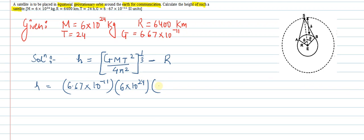Then time period 24 hours, we'll convert it to seconds: 24 into 60 into 60 upon 4π square, 4 into 3.14 square, minus R, 6400 km into 1000 meter. So this will be our data. We'll solve this.